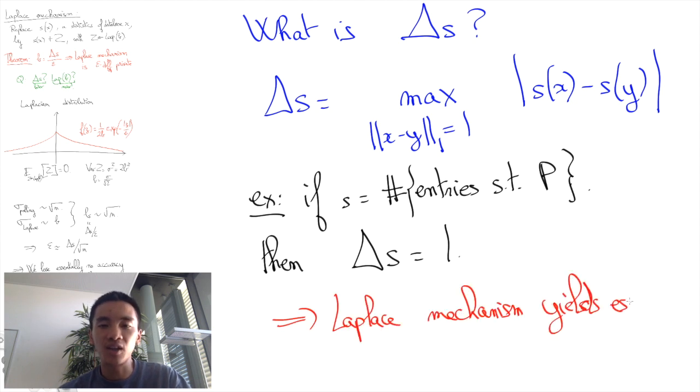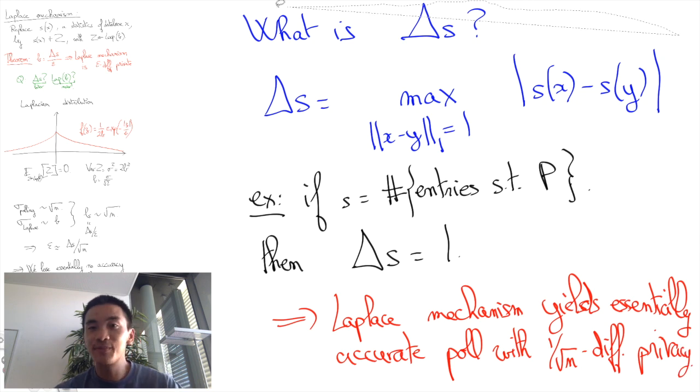In such a case, we can obtain an essentially accurate poll of 1 over square root of n differential privacy, which is pretty good.